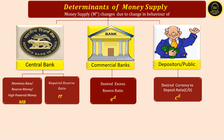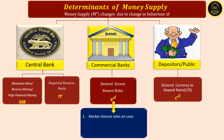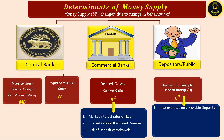In part 2 of the determinants of money supply, I will discuss the sources of change in reserve money by the central bank and how central bank decisions on the required reserve ratio impact money supply. In part 3, we will find out the factors responsible for commercial banks' desired excess reserve ratio — including market interest rate on loans, interest rate on borrowed reserves, and risk of deposit withdrawal. In part 4, we will see the factors responsible for the public's desired currency to deposit ratio, including interest rate on checkable deposits, fees on checkable deposits, probability of bank failure, illegal activity, and income.